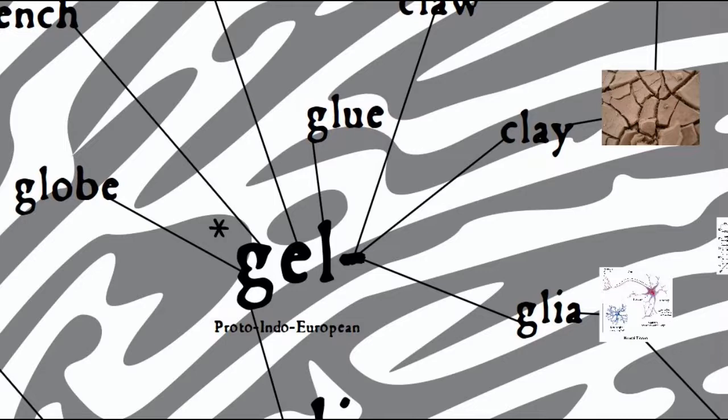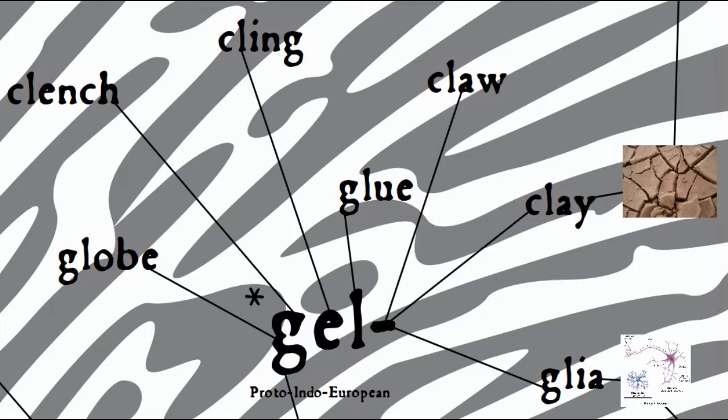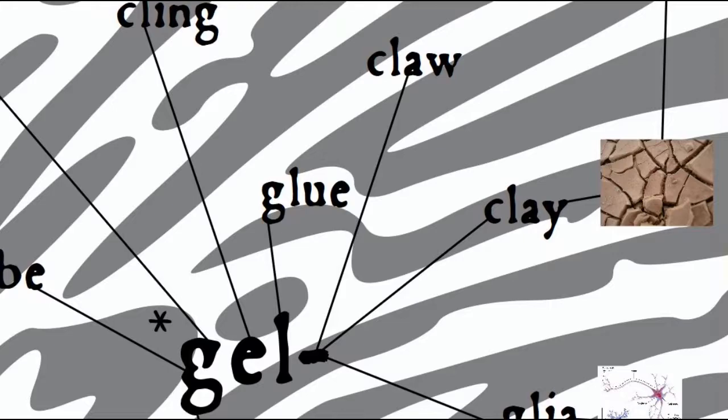But back to the word clue. It comes ultimately from an Indo-European root that meant to gather into a mass, conglomerate, or curl, and leads eventually, through various language paths like Germanic, Latin, and Greek, to many modern English words, such as glue, globe, claw, clench, cling, and clay.